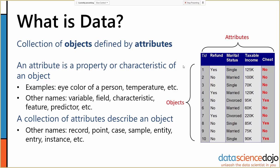Similarly, data objects have many different names: records, points, cases, samples, entities, entries, instances, and more. A set of data is called a data set, but sometimes it's called a table, or simply 'our data' referring to the set as a whole.